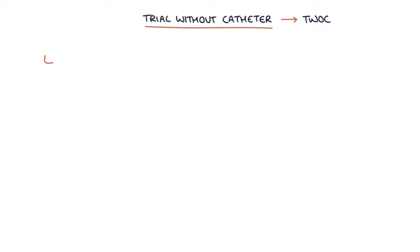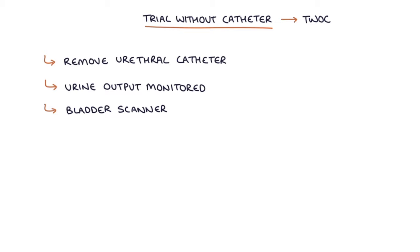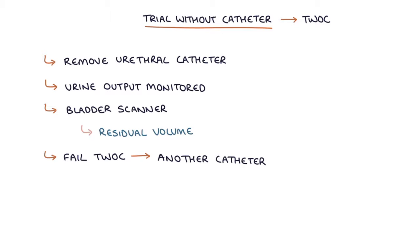A trial without catheter, or TWOC, involves removing a urethral catheter to see if the patient can manage without it. After the catheter is removed, urine output is monitored and a bladder scanner is used to make sure there is minimal residual volume left in the bladder after passing urine. Patients may fail the TWOC, meaning another catheter needs to be inserted.